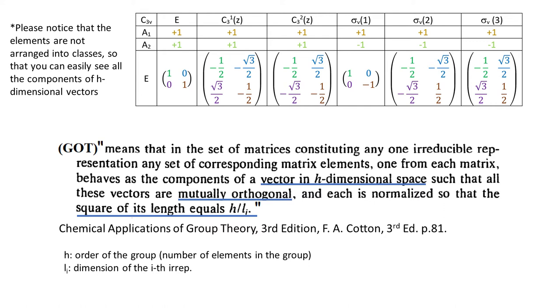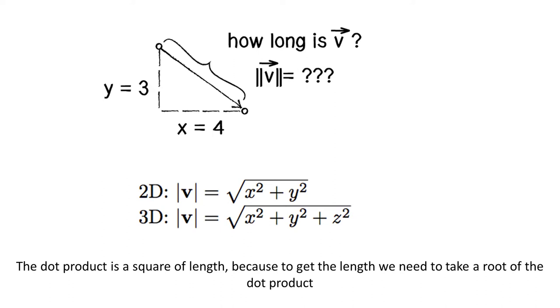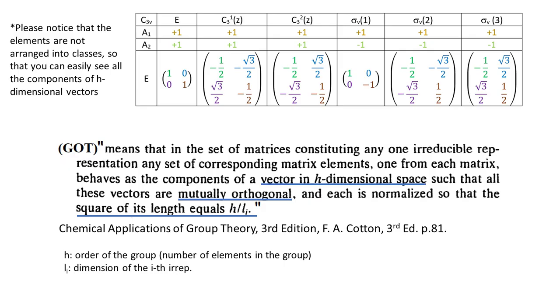GOT also says that the square of length of any of these vectors has some constant value. I hope you recall how to calculate the length of a vector. This vector is of length 5, it's just Pythagoras theory. We take a dot product of the vector by itself and then we take the root of it. So the square of length is just dotting the vector by itself. And this definition of vector length can be extended to higher dimensions. So coming back to GOT, when we dot any of these vectors by itself, it will be equal to H divided by the dimension of the EREP that the vector belongs to.